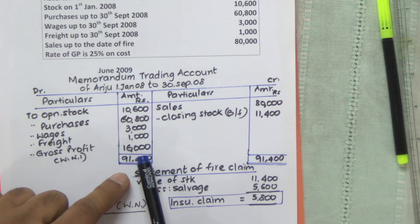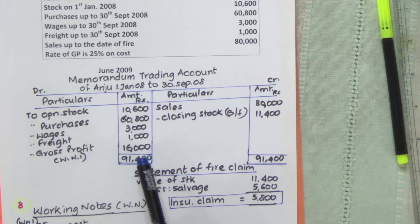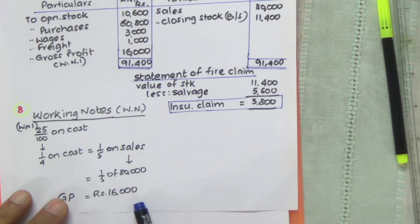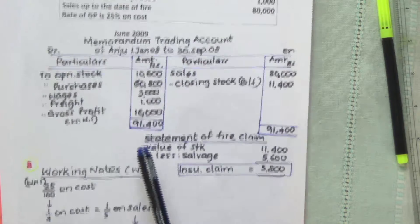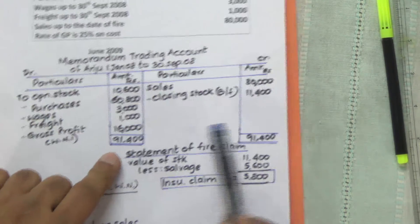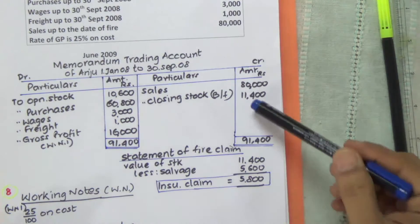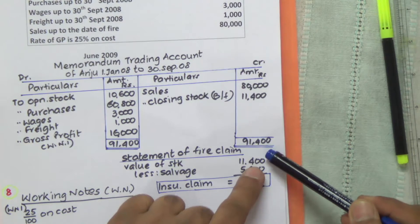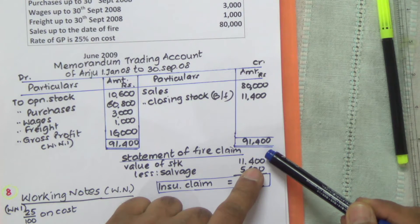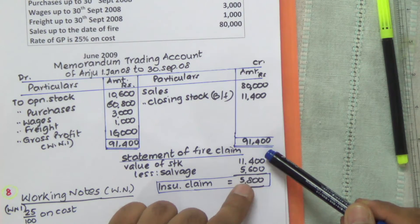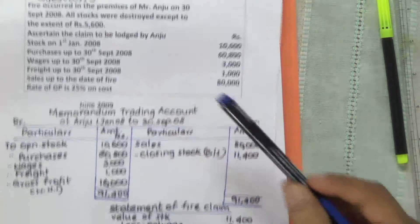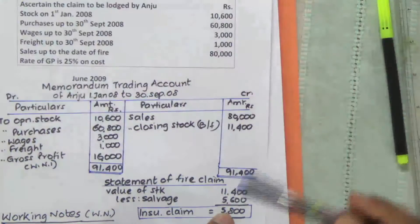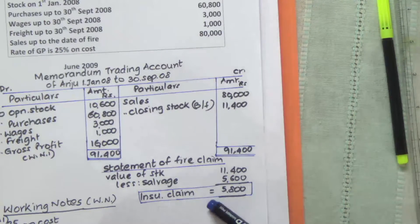The GP is arrived at based on the GP ratio, which we did here. Based on the GP ratio, we got 16,000, and that 16,000 is copied here. Closing stock is the balancing figure, and this figure is taken here — that's the value of stock on the date of fire. Less salvage, which is given in the problem as 5,600 saved, so less salvage of 5,600.